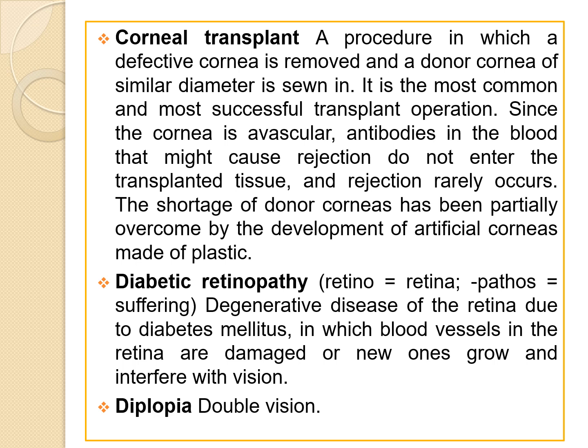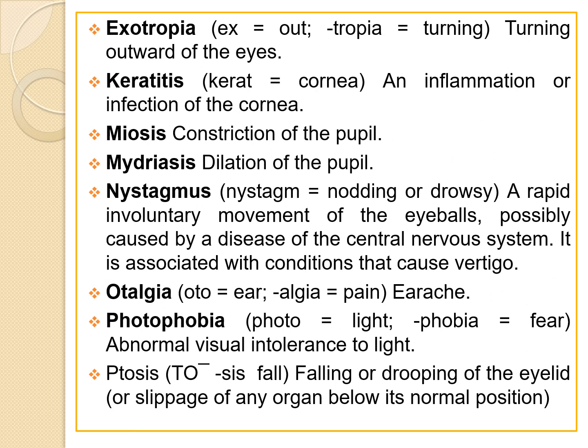The next term is diplopia, which in simple terms means double vision — an image appears as two images. The next term is exotropia, which is the turning outward of the eye. 'Ex' means out, and 'tropia' means turning, so exotropia means turning outward of the eye.